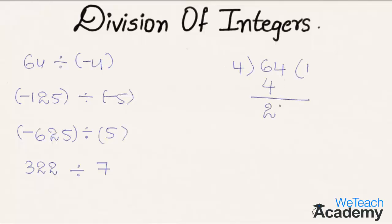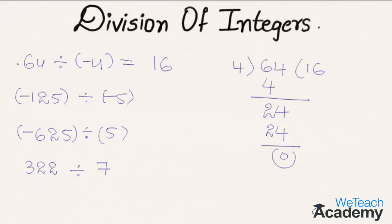Bringing down the next digit 4, we get 24. Here 4 six times is 24, so 24 minus 24 is 0. We get the result as 16.